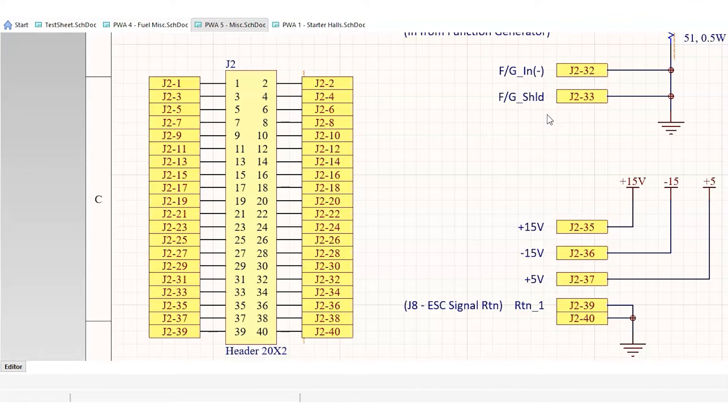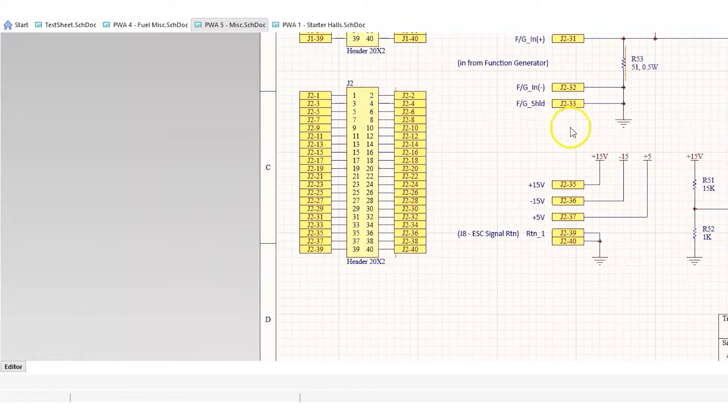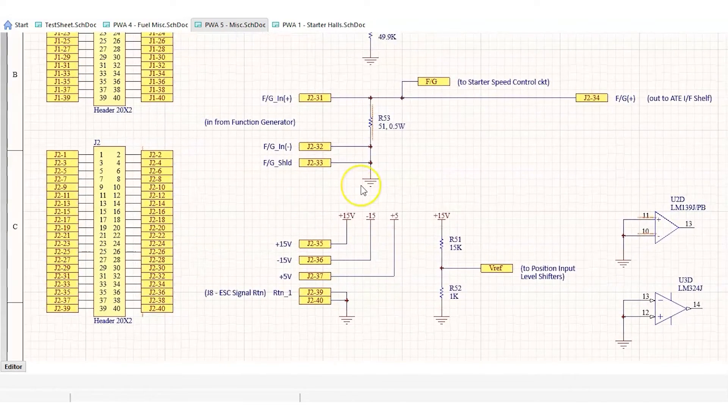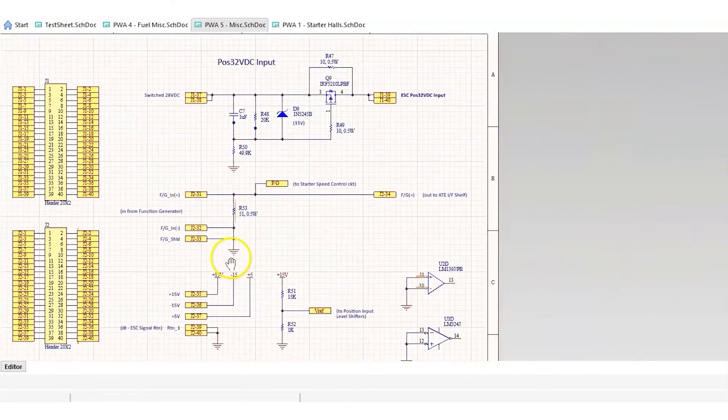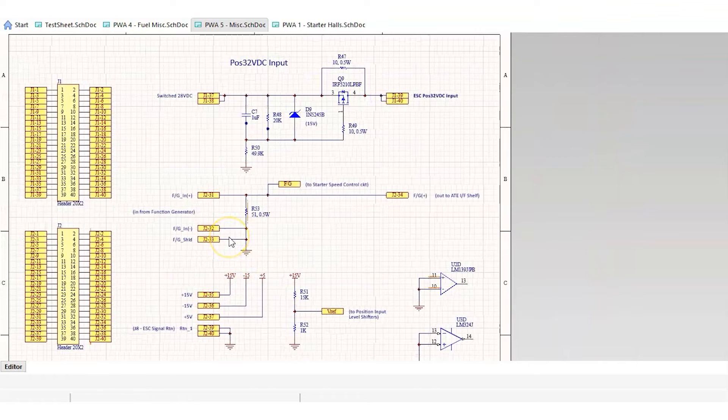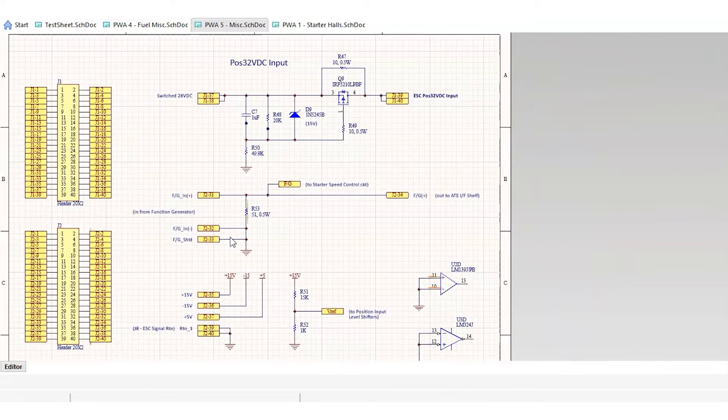Instead, you should use multiple sheets with objects like ports and net names to define connectivity within and between schematics. Net names and ports give you a simple way to define net connectivity in your schematic sheets. Using ports and net names allows you to define inputs and outputs clearly and it helps you declutter your schematics so that they're much easier to read.